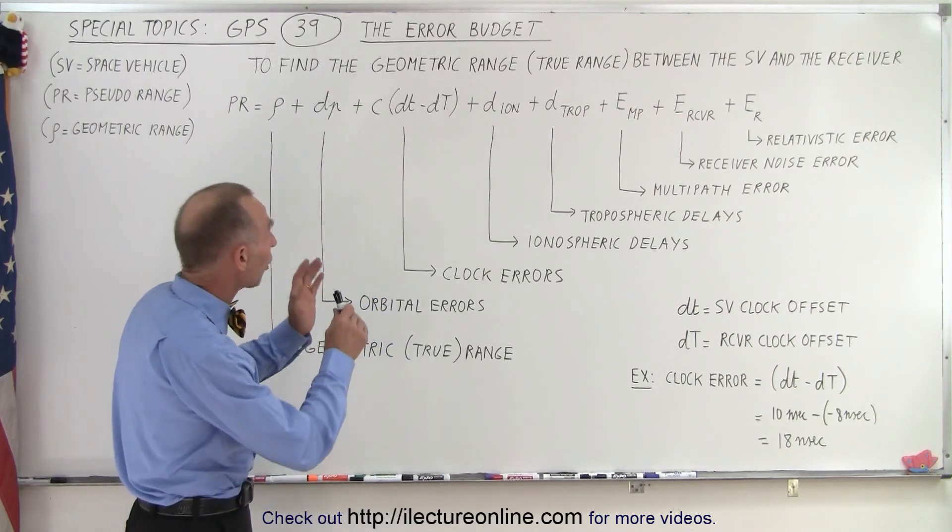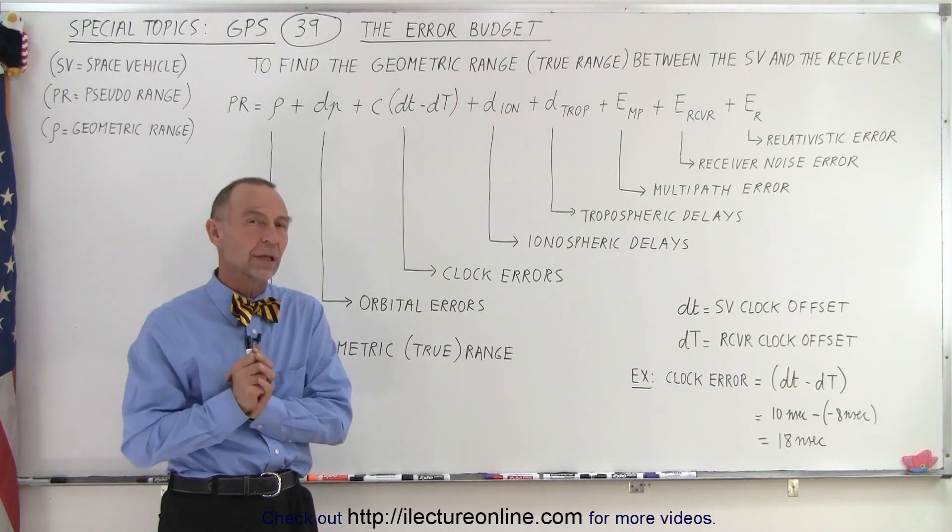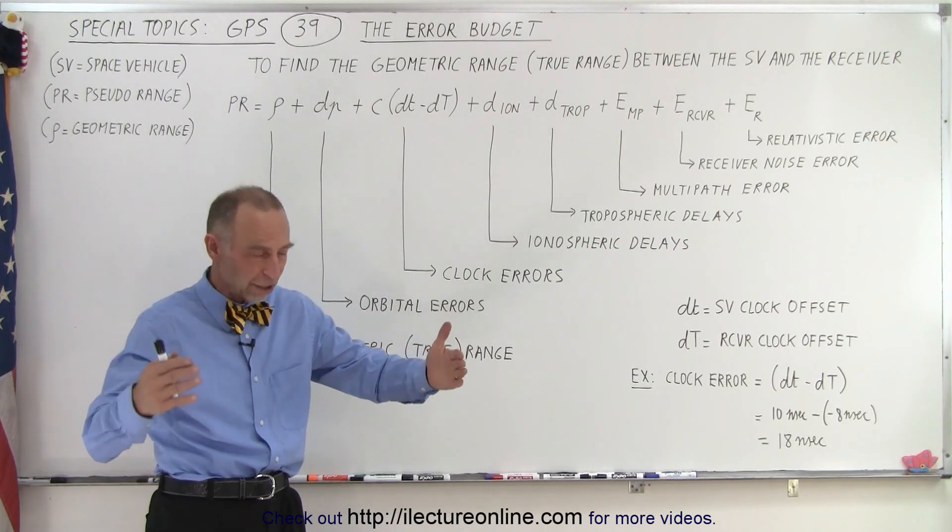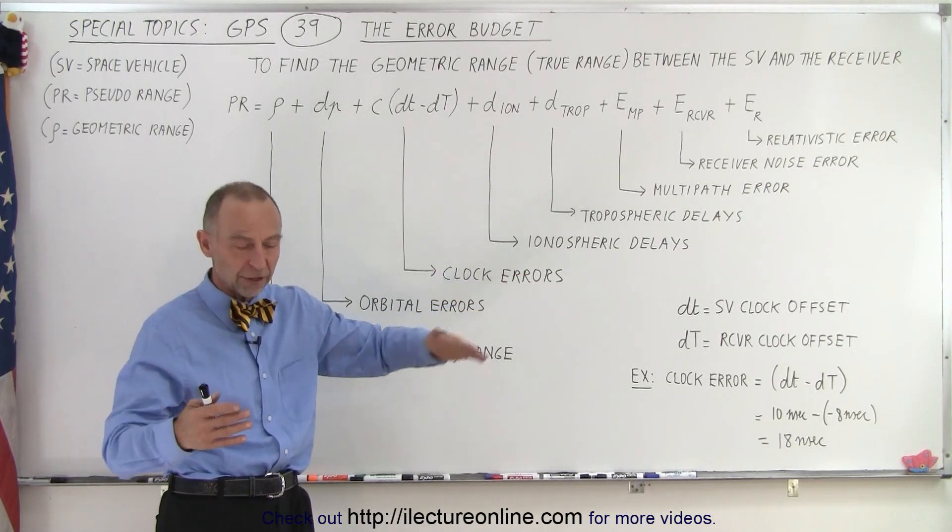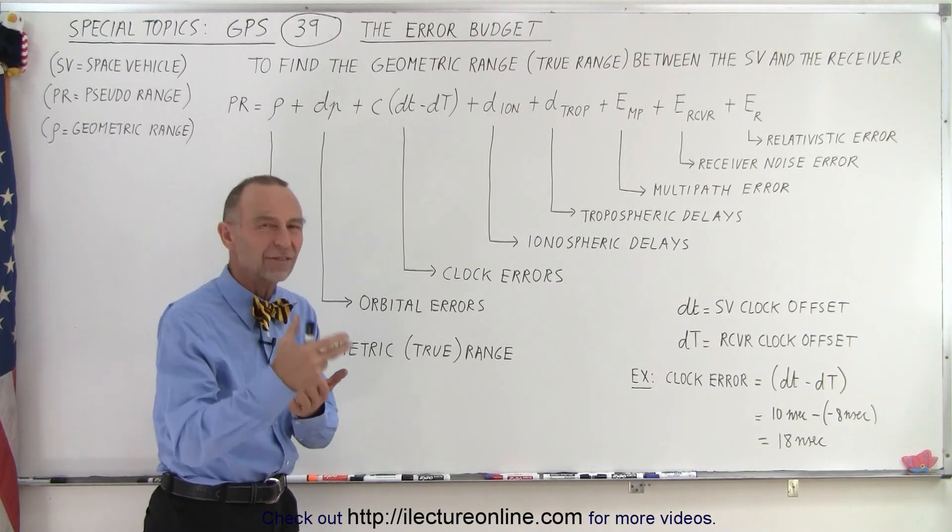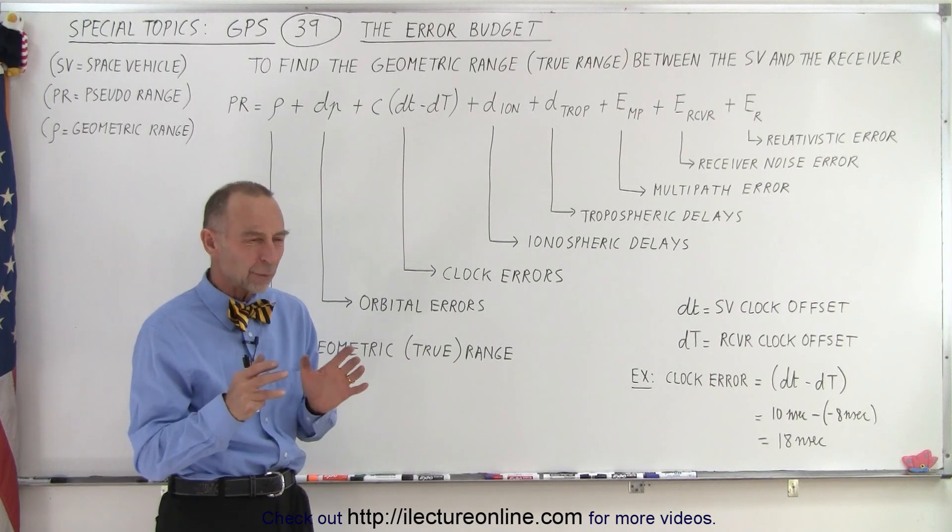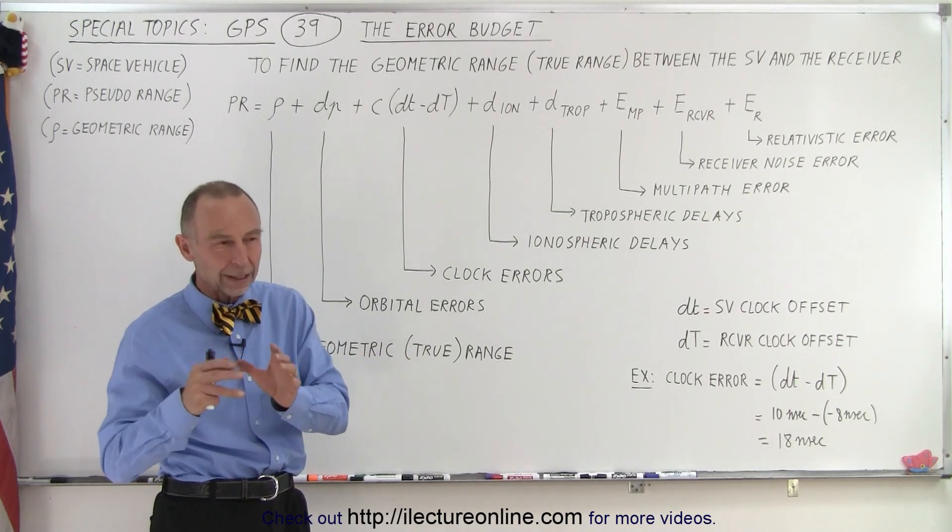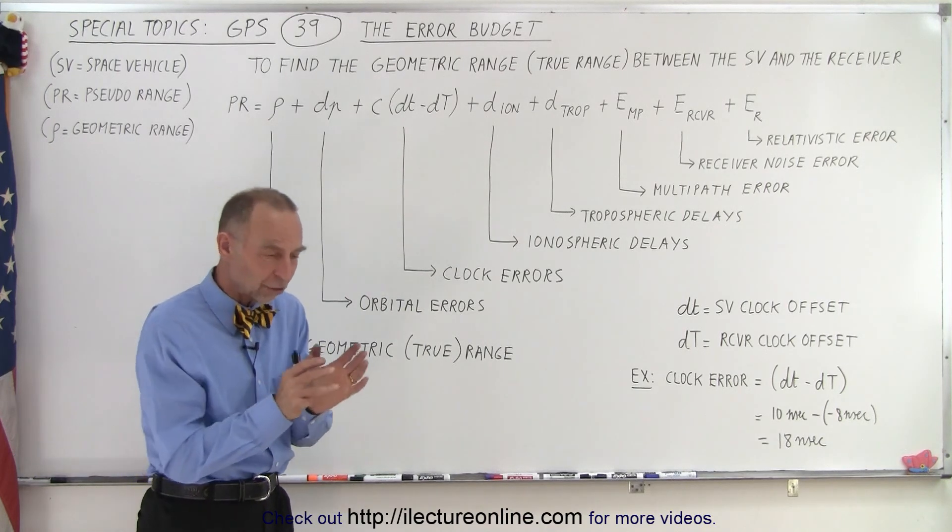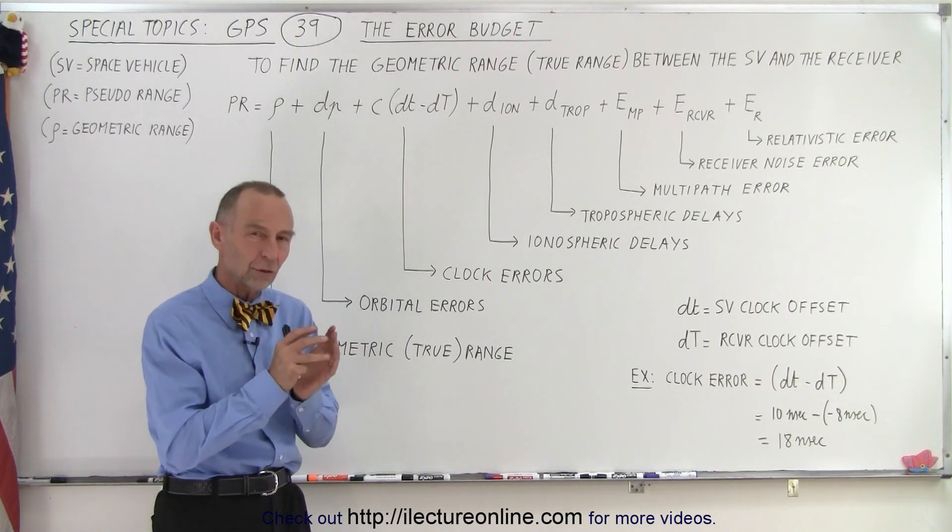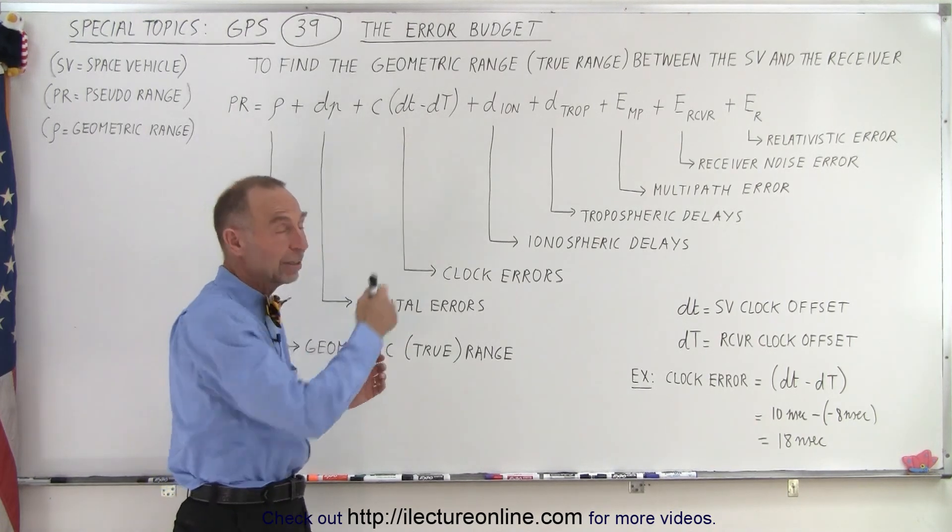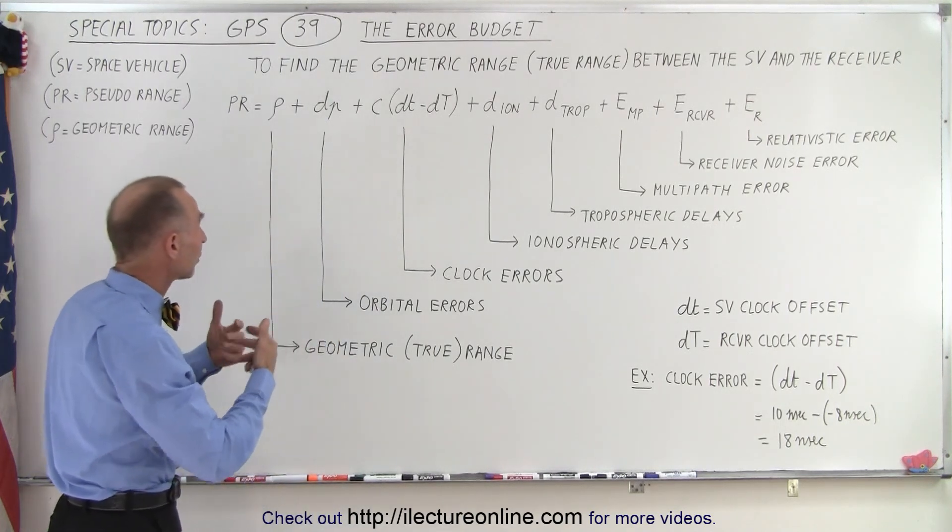Here we're going to show you what we call the error budget. The difference between the true geometric range, being the true range between the satellite (called the SV, the space vehicle) and the receiver, and then the pseudo-range, the initial estimate. It's not really an estimate, we do a calculation. Without taking care of any of the errors we might have in our equation to get some initial rough distance or rough range between the satellite and the receiver, we refine it by adding all these adjustment terms. That's what we call the error budget.